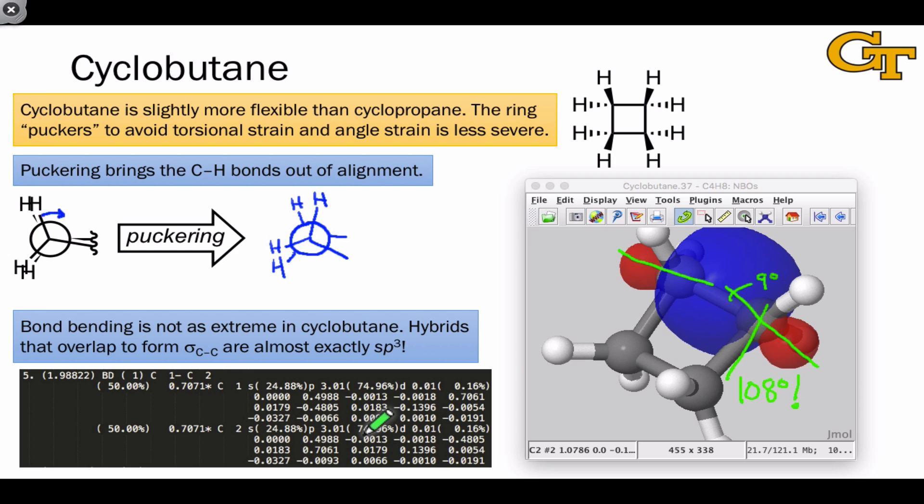If we look at the compositions of the hybrids as determined by an NBO calculation, we only get further evidence. The hybrids in the CC bonds are essentially perfectly sp3, as indicated by the results of this calculation: 24.88% S and 74.96% P to construct these hybrids.